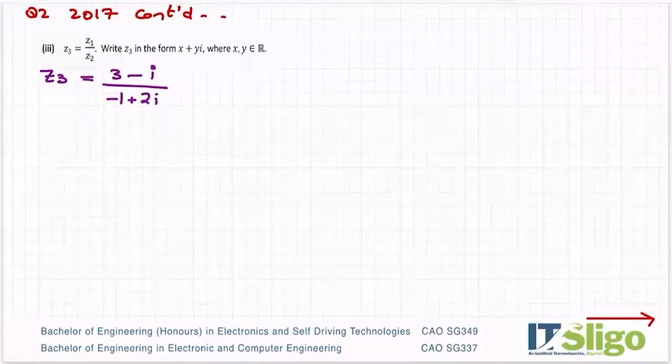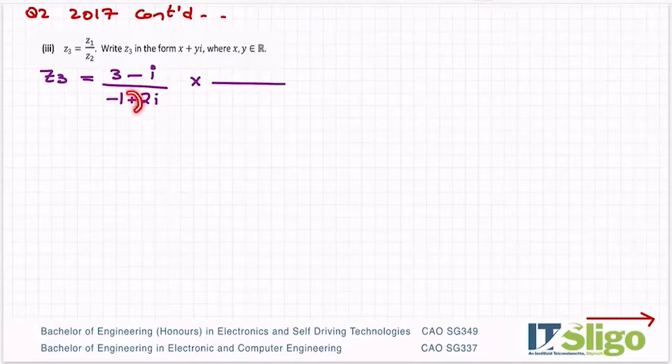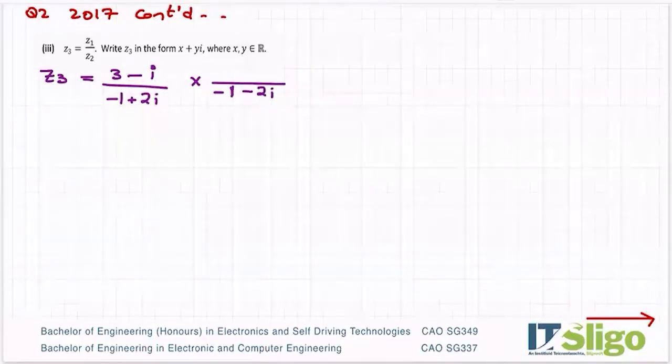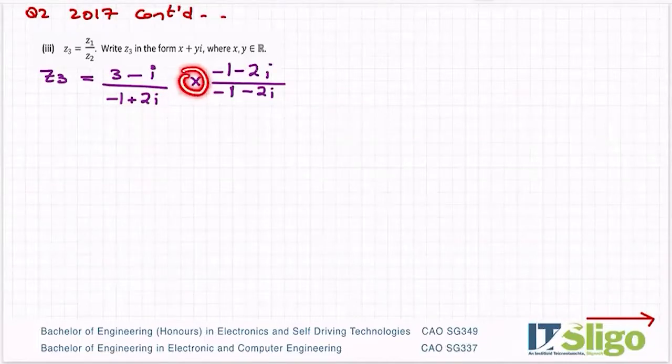This is very like the question we did a few minutes ago off the 2018 paper. We multiply above and below by the conjugate of the bottom. The conjugate of the bottom: change the sign of only the imaginary part, so not of the real part, that stays as minus one, but we change the sign of the imaginary part. And what I do to the bottom I have to do to the top.